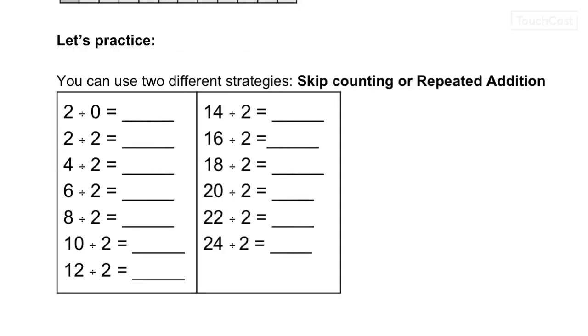Alright, so kind of similar to what we did yesterday. We're going to do all of the twos and see how we do. We're going to be using skip count and repeated addition because we're not doing division, actually. When you do division, you're just using multiplication. So I'll show you.